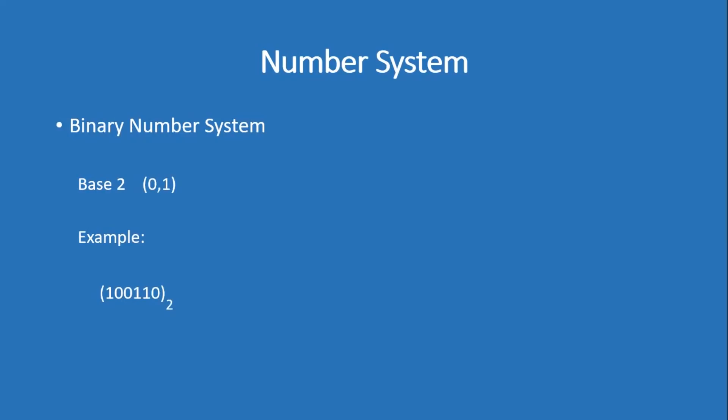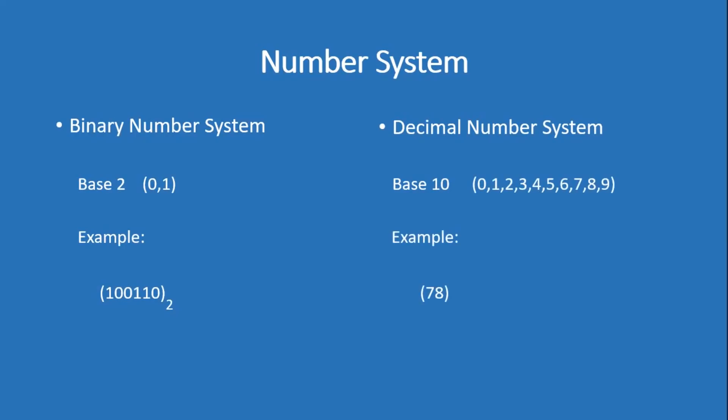The next number system is the decimal number system, which we all know. There are 10 digits, so the base is 10, and the digits are 0 to 9. An example we use in daily life is 78 with base 10.